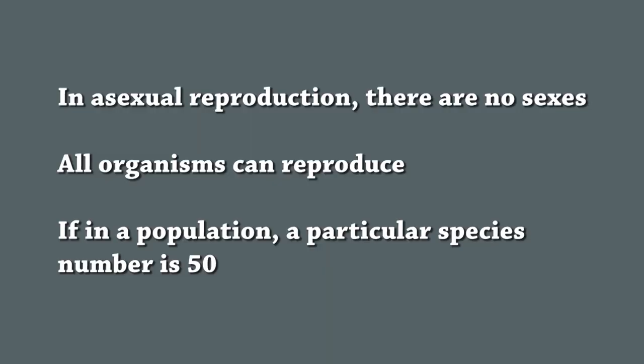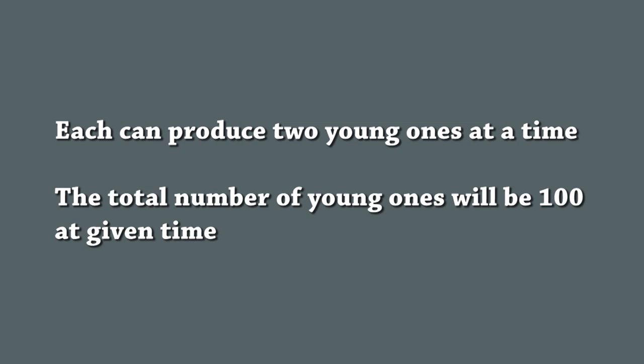In asexual reproduction, you cannot differentiate organisms by their sex. All organisms of a particular species can reproduce. For example, if a population of a particular species numbers 50, and each can produce two young ones at a time, the total number of young ones produced will be 100 at any given time.